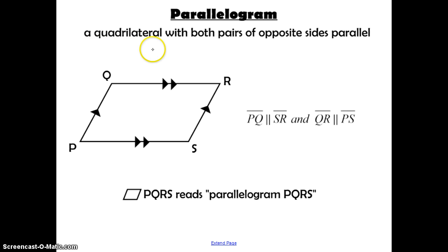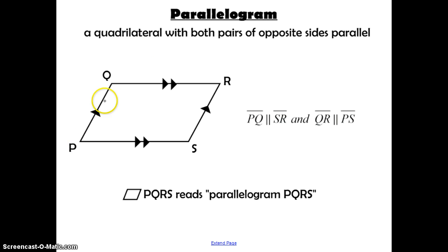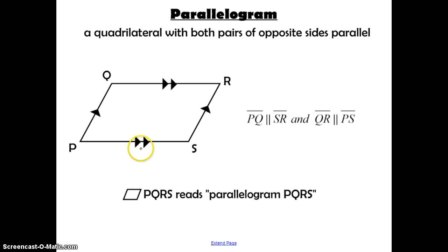A parallelogram is defined as a quadrilateral with both pairs of opposite sides parallel. A quadrilateral is a four-sided polygon. Here we have PQRS. PQ is parallel to RS, and they're both marked with one arrow. QR is parallel to PS, and they're both marked with two arrows — that tells us those are parallel to each other, but not parallel to the first set of lines.